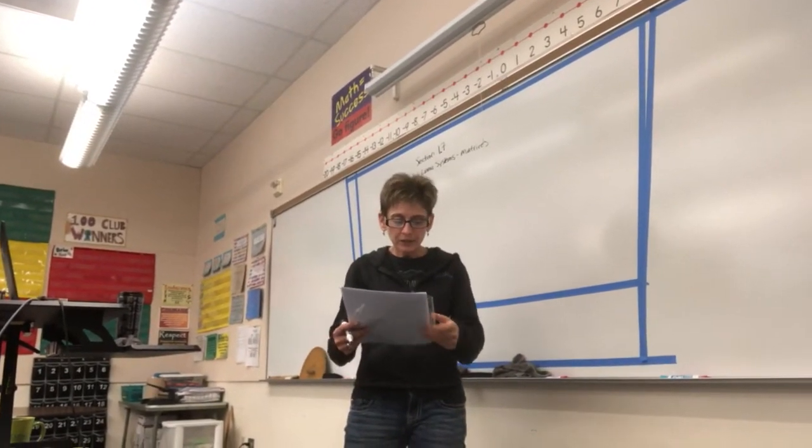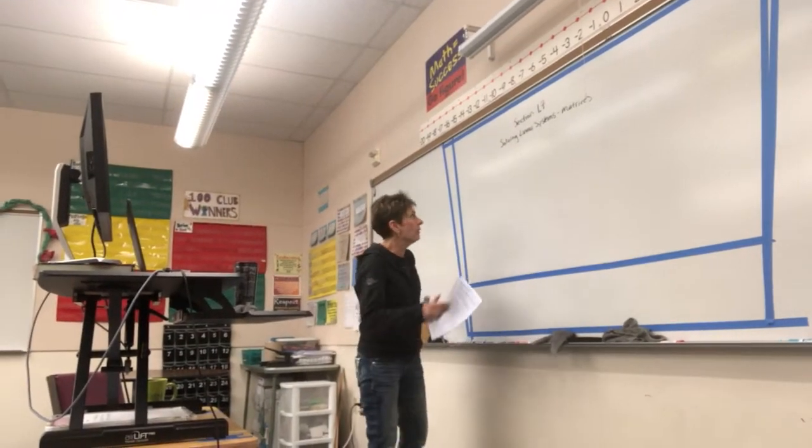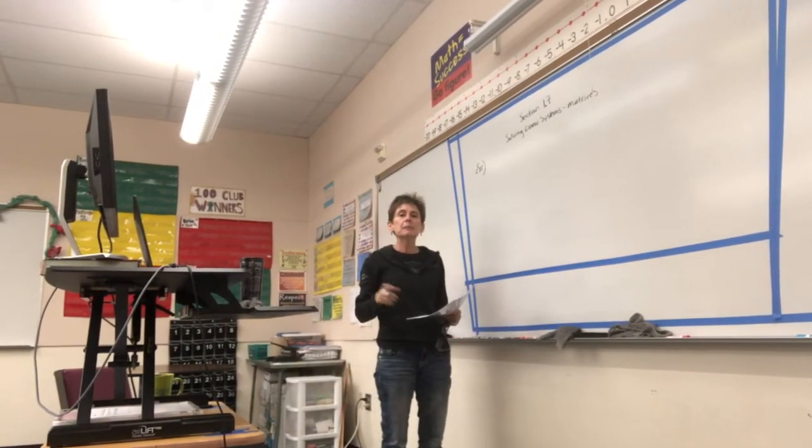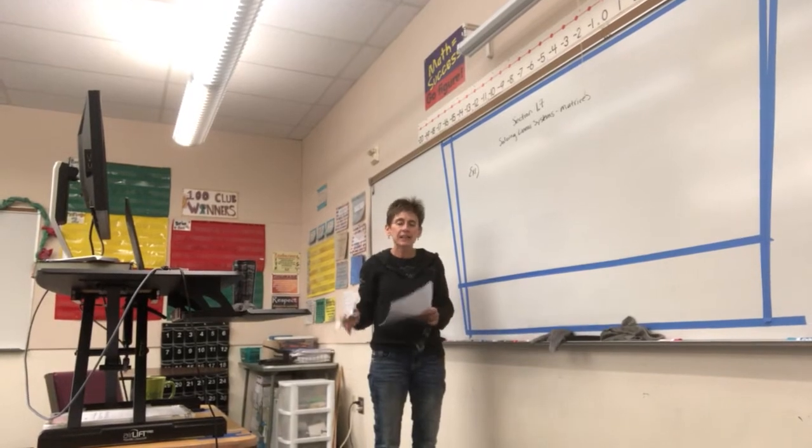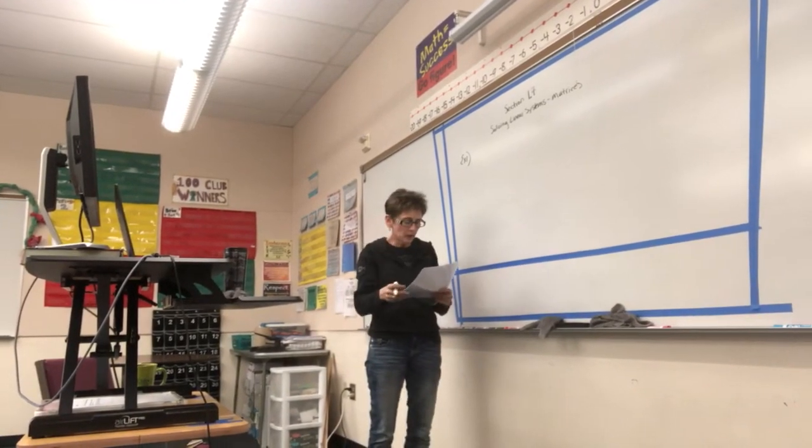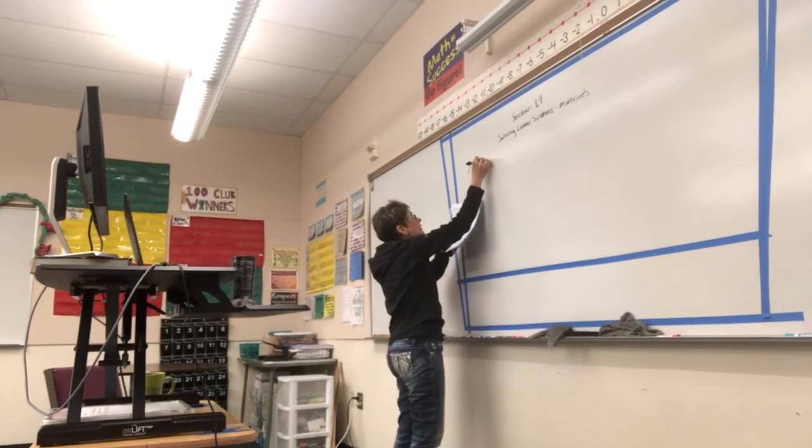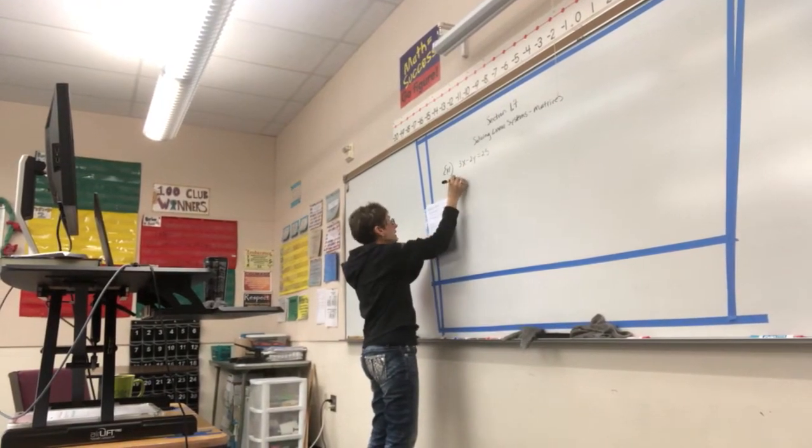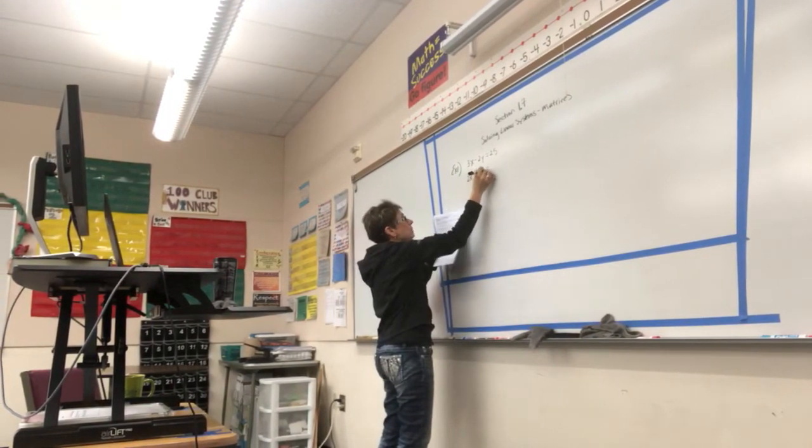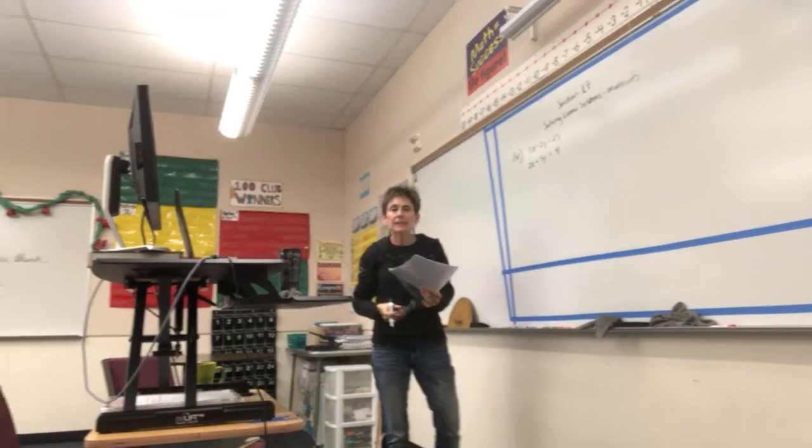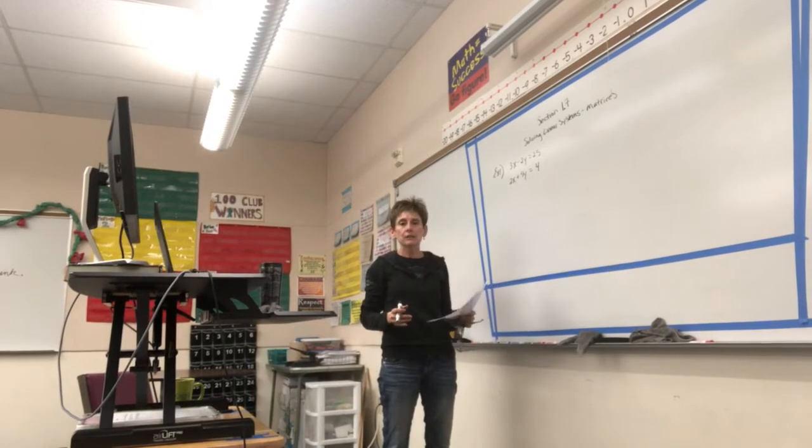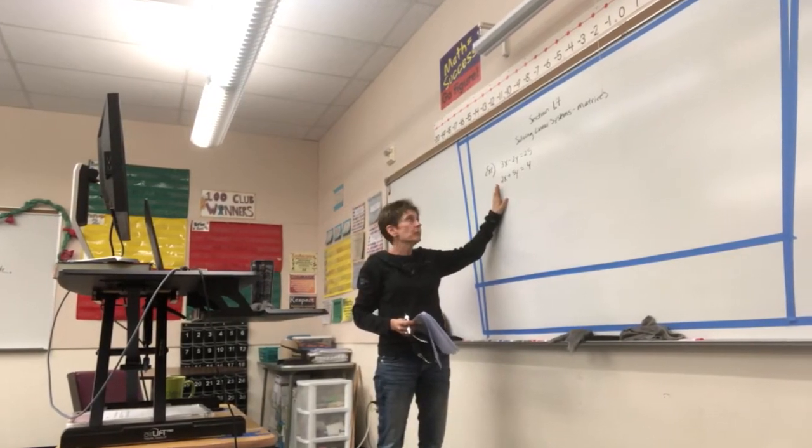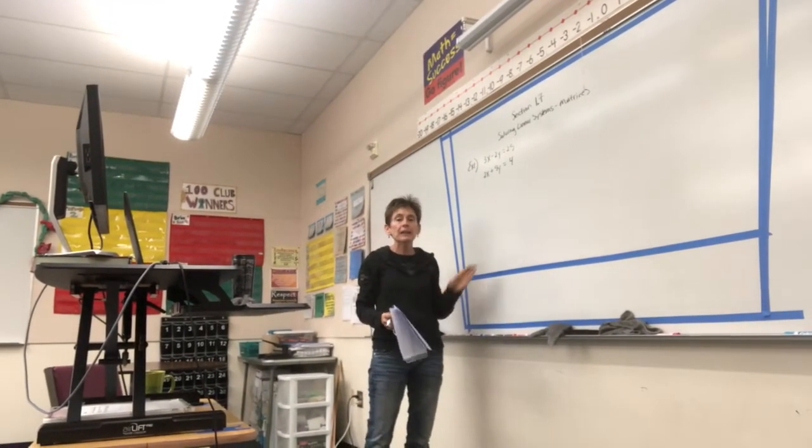I'm going to do three examples and they are all going to be solving a linear system using matrices and they're all going to be doing this by hand. This video will not contain examples using the calculator. Alright, so let's go ahead and write down our system. 3x minus 2y equals 25 and 2x plus 5y equals 4.